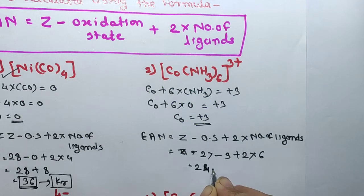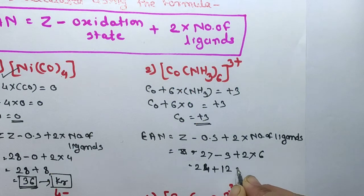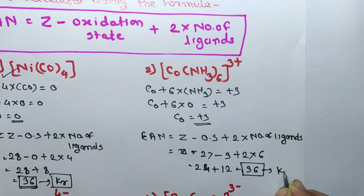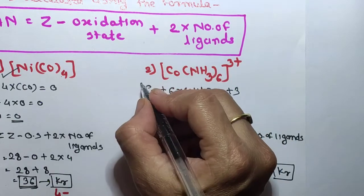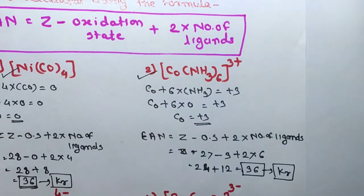The EAN of Co(NH₃)₆³⁺ comes out to 36, which is the nearest noble gas configuration — krypton, having atomic number 36. Therefore Co(NH₃)₆³⁺ is the most stable complex.